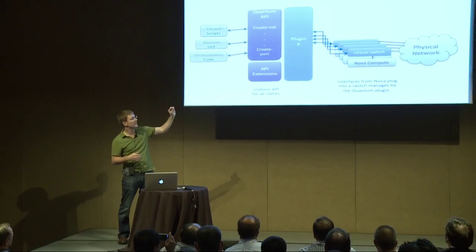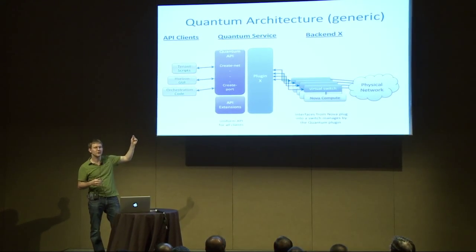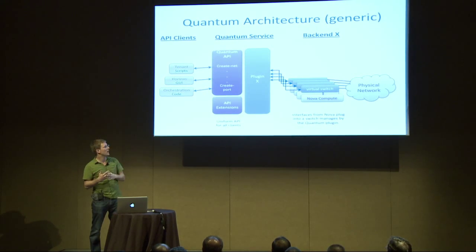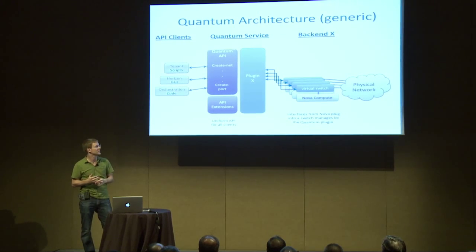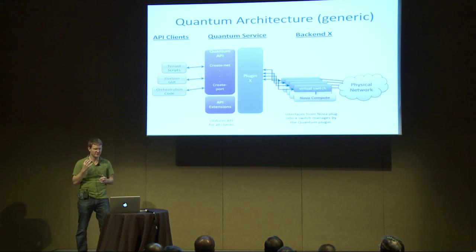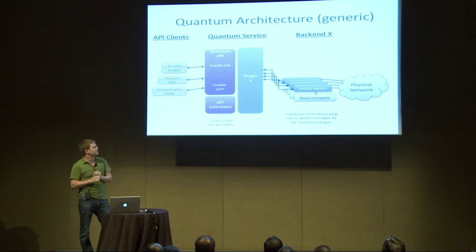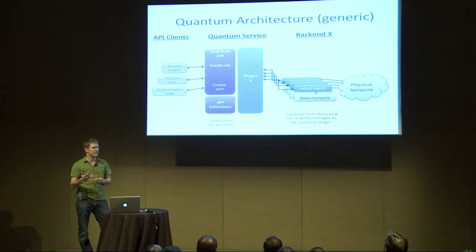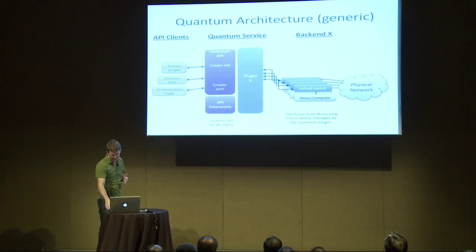A plug-in will talk to the switching infrastructure adjacent to each Nova compute node — it could talk to just the virtual switch, to both the virtual and physical switch, or even just a physical switch if using a technology like VN-tag that maps VMs directly to the physical network. Each plug-in makes certain assumptions about the physical network: a simple plug-in might assume all VLANs are trunked everywhere, while overlay-based plug-ins say the physical topology doesn't matter because you'll overlay on top of it.